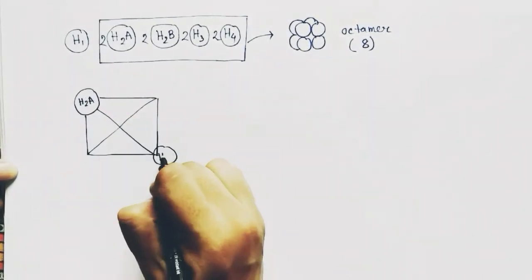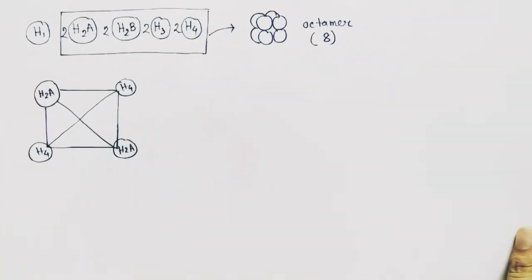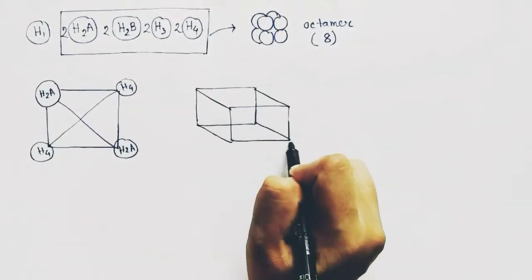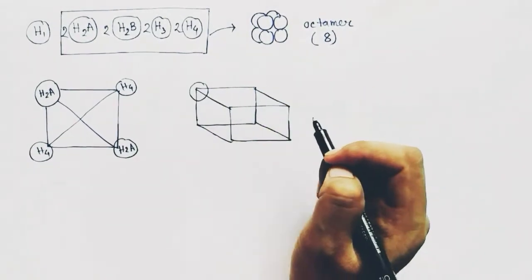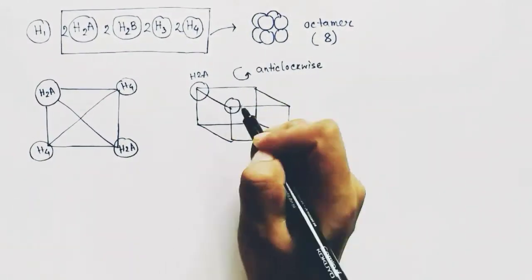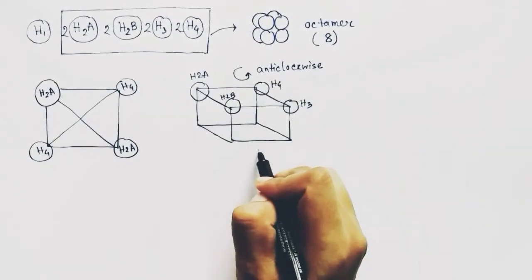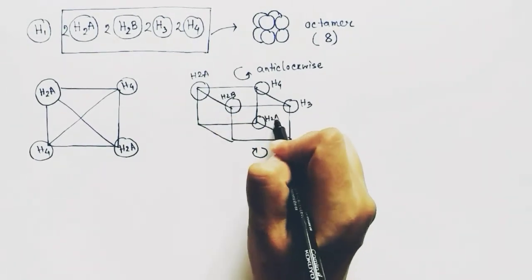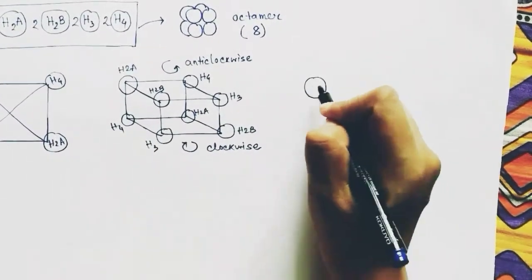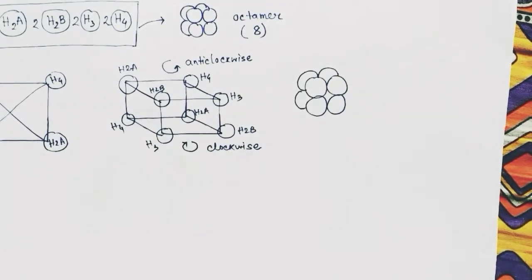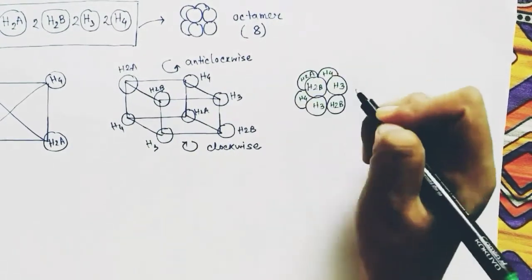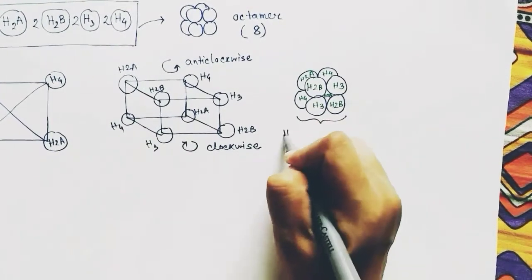Each protein remains diagonally opposite in a square plane. Now when it forms an octamer, each protein remains at the corners of the cube. If we see from the upper side it goes anti-clockwise, and if we see from downwards it goes clockwise, just like this, forming the octamer, the histone octamer. H2A, H2B diagonally positioned in the same plane, and all of them similarly. This is the histone octamer.